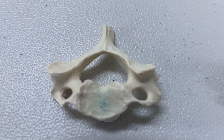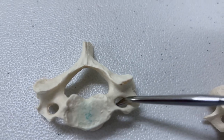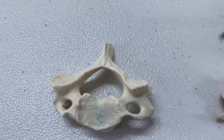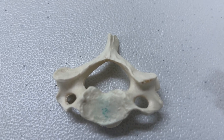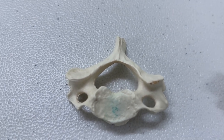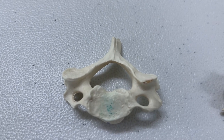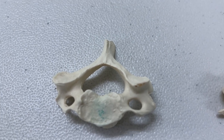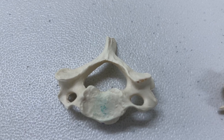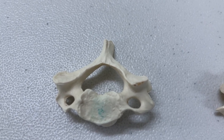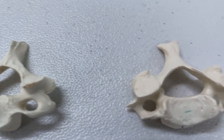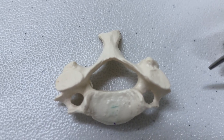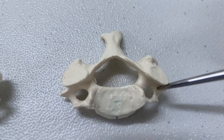Straight away you can see this foramen here — this is what is called the transverse foramen. The transverse foramen, as the term implies, is situated in the transverse process. This is a very important foramen because it gives passage to the vertebral artery, one on each side, which goes all the way up to the base of the skull, enters the skull, and supplies the posterior cerebral circulation. This is the most important and most distinguishing feature of a cervical vertebra, and in any cervical vertebra — whether typical or atypical — the transverse foramen has to be present.